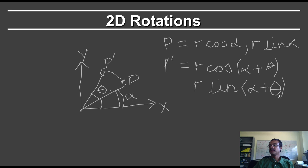So this is the coordinates of P prime. It's easier to see this in polar coordinates. In order to get the Cartesian coordinates, we now need to use standard trigonometric identities to expand cos of alpha plus theta and sine of alpha plus theta.